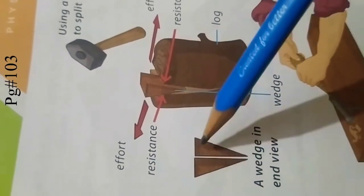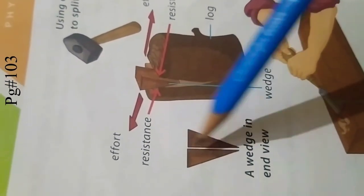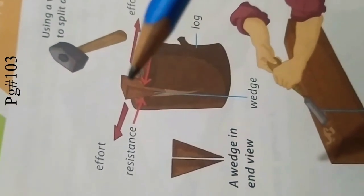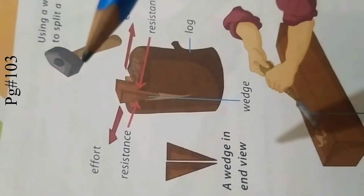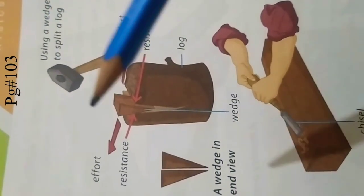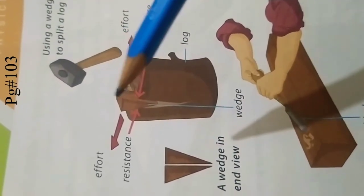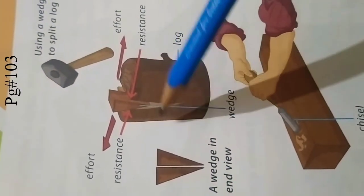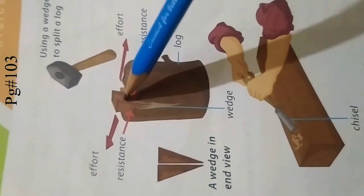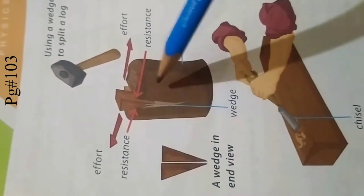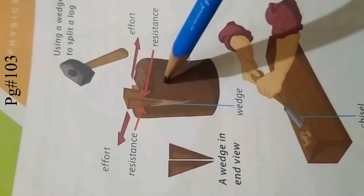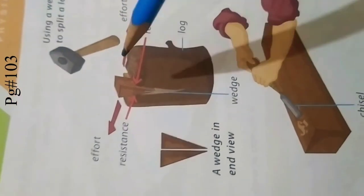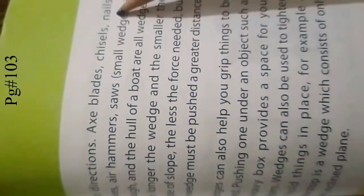These are two inclined planes joined together back to back. Then a wedge is put on a lock and it is pushed by a hammer. Effort is applied on its head. The resistance splits this lock apart. What is this wedge? The resistance of this lock splits this apart by the action of these effort and resistance. Axe blades, scissors, nails, air hammers, saws, knives - all are wedges.